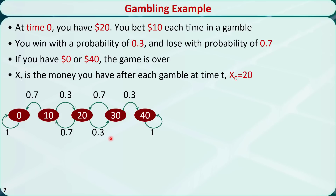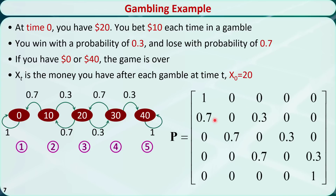This is called a state transition diagram. Each node represents a state, marked as 1, 2, 3, 4, and 5. Each arc ij represents the transition probability p_ij. Based on this diagram, we can write out the state transition probability matrix. For example, p_{3,2} equals 0.7, meaning from state 3 to state 2 the transition probability is 0.7, or 70%. Because we start at state 3, the initial probability distribution has 100% probability at state 3.